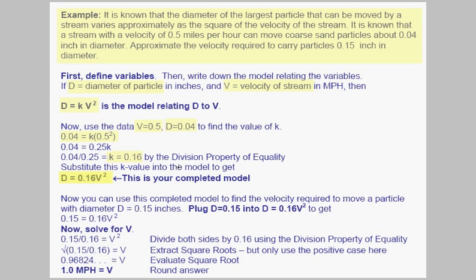We can use this model to answer other questions. Our other question is, what's the velocity to move a particle of diameter 0.15? So we plug 0.15 in for d, and we get 0.15 equals 0.16v squared. We can solve this equation for v. Divide both sides by 0.16, square root it, and we get v equals 0.96824. We can round that, and we get about 1 mile an hour as a velocity needed to move a particle of diameter 0.15 inches.